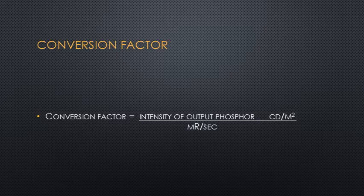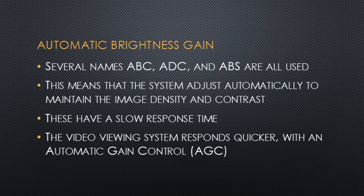Brightness from phosphors can lose luminescence due to age, which occurs about 10% per year. When a phosphor ages, more technical factors are needed. There are different automatic systems used in the image intensification process: automatic brightness control (ABC) is the most common terminology; ADC is automatic dose control; and ABS is automatic brightness stabilization. These systems adjust technique to subject density and contrast automatically by increasing or decreasing technical factors.